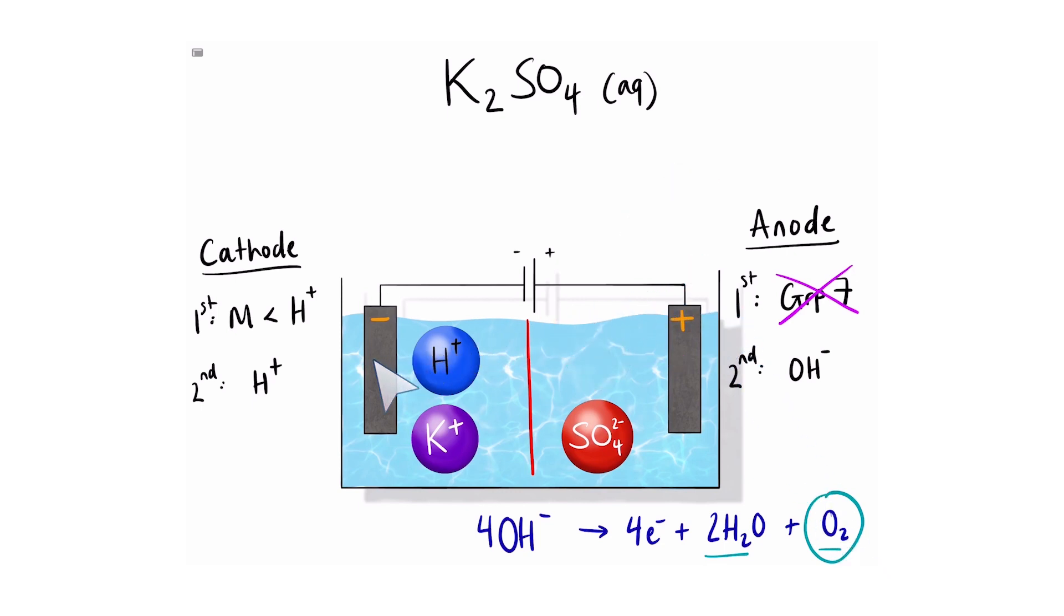Now, moving towards the cathode. We have hydrogen ions and potassium ions. Now, potassium is actually more reactive than hydrogen. Again, remember, we don't have copper. Therefore, we do not have a metal that is less reactive than hydrogen. The hydrogen ions will move towards the electrode and produce hydrogen gas.